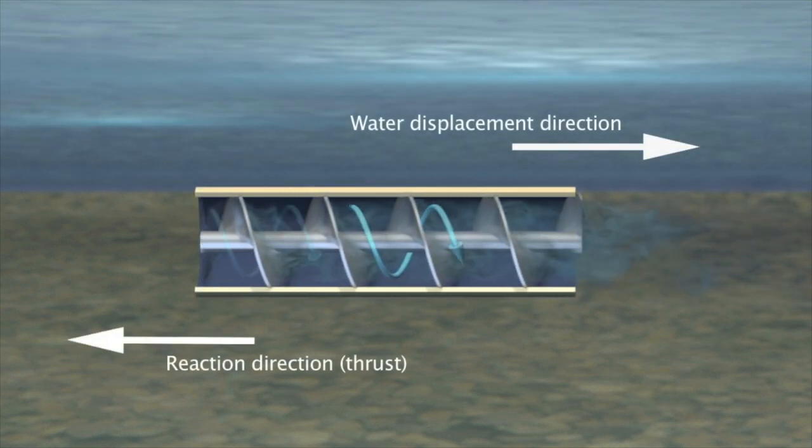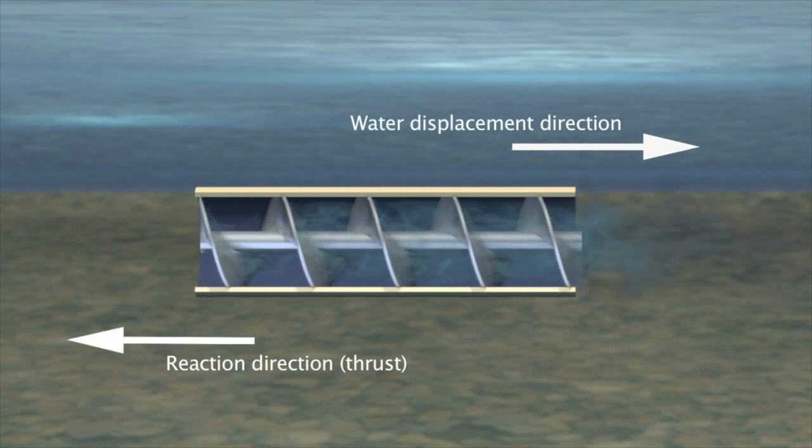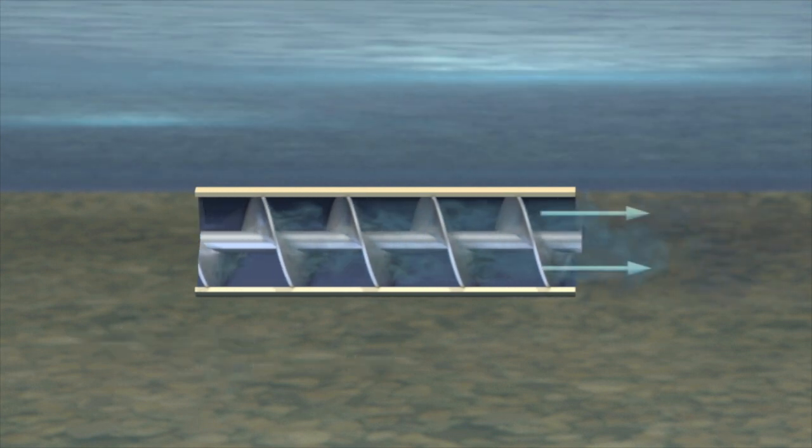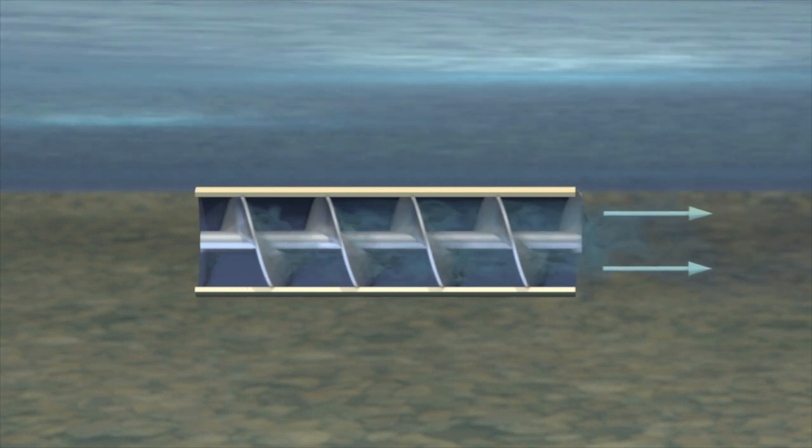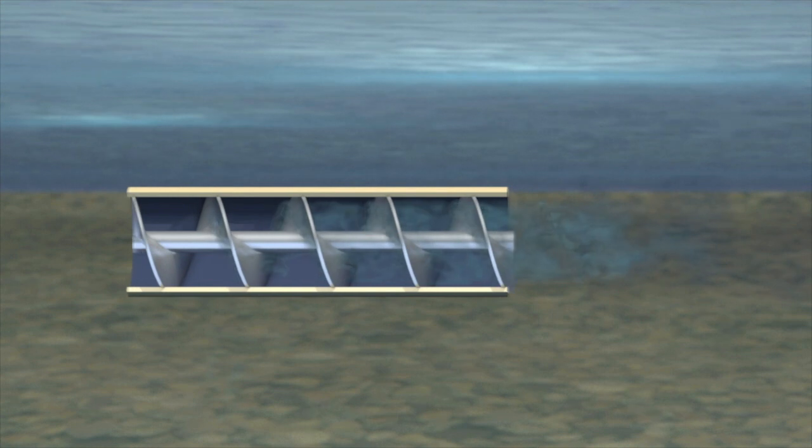This is because of Newton's third law. For every action, there's an equal and opposite reaction. The difference in pressures at each end of the screw produces a thrust, forcing it to move through the water.